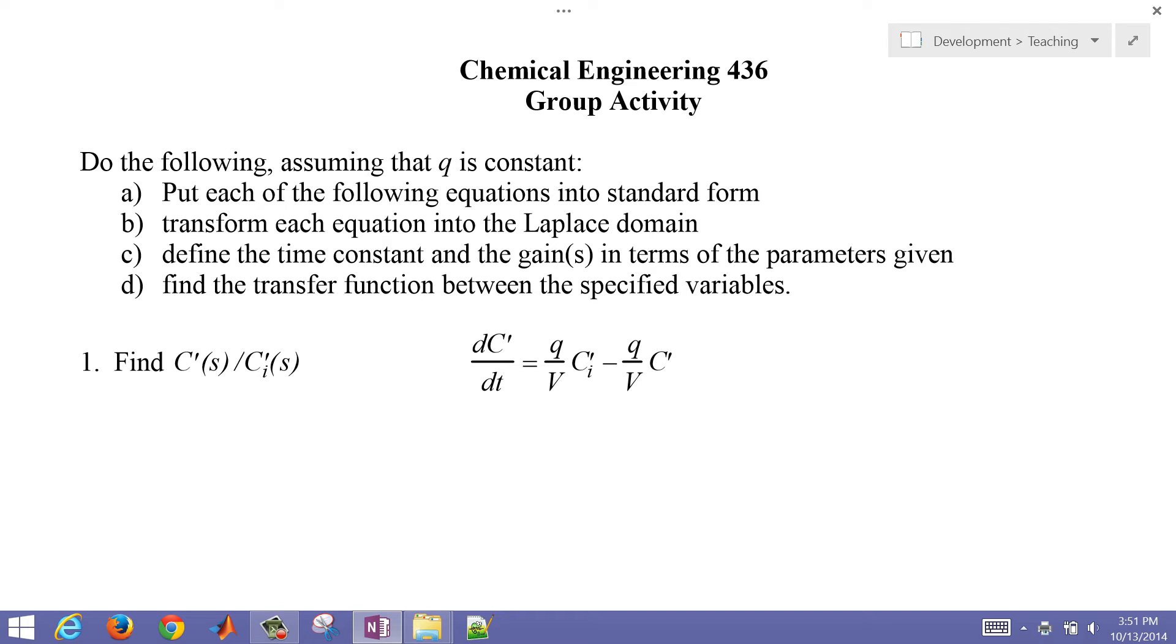In the first example, we have just a simple tank with a certain inlet concentration and then an outlet concentration as well. So Ci, you have a concentration coming in and a concentration leaving. And we want to get a transfer function.